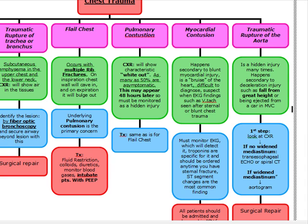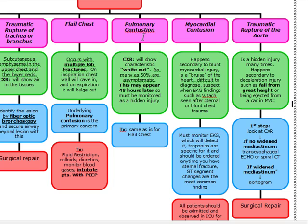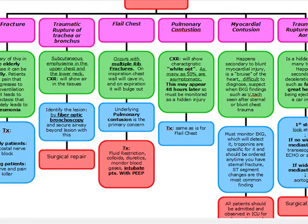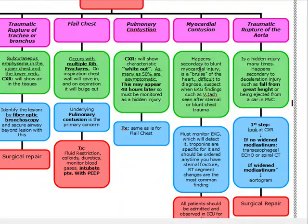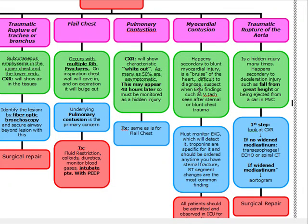Next topic is myocardial contusion. Pulmonary contusion is going to happen after a car accident or some type of chest trauma and you look for white-out. Myocardial contusion is going to happen secondary to a blunt myocardial injury — a bruise of the heart. These patients can show up with a bruised chest and it's difficult to diagnose. In the stem of the question, look for a patient with some type of chest trauma — usually after a car accident — who has EKG findings such as V-tach or some type of arrhythmia after blunt chest trauma.